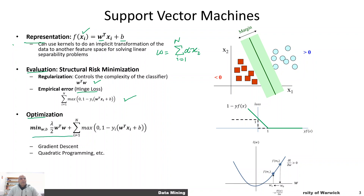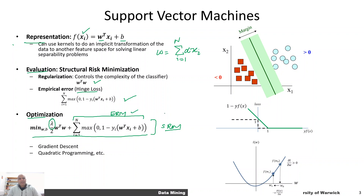The overall optimization problem for a support vector machine can be written down mathematically. This parameter controls the relative compromise between the margin maximization term and the hinge loss function — the sum of hinge losses for all examples. The loss minimization part is called empirical risk minimization, whereas including the regularization term is called structural risk minimization. Structural risk minimization achieves better performance compared to empirical risk minimization, especially when the dataset is really small or the number of dimensions is very large.